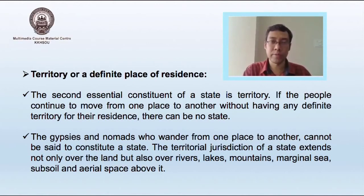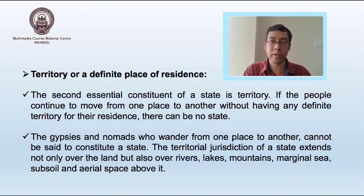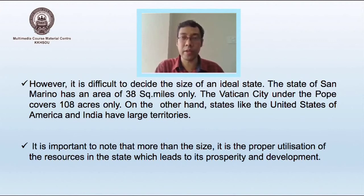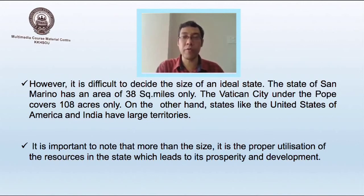The second essential constituent of a state is territory. If the people continue to move from one place to another without having any definite territory for their residence, there can be no state. The gypsies and nomads who wander from one place to another cannot be said to constitute a state. The territorial jurisdiction of a state extends not only over the land, but also over rivers, lakes, mountains, marginal sea, subsoil, and aerial space over it. The state of San Marino has an area of 38 square miles only, and the Vatican City covers 108 acres only. States like the United States of America and India have large territories. More than the size, it is the proper utilization of resources which leads to a state's prosperity and development.